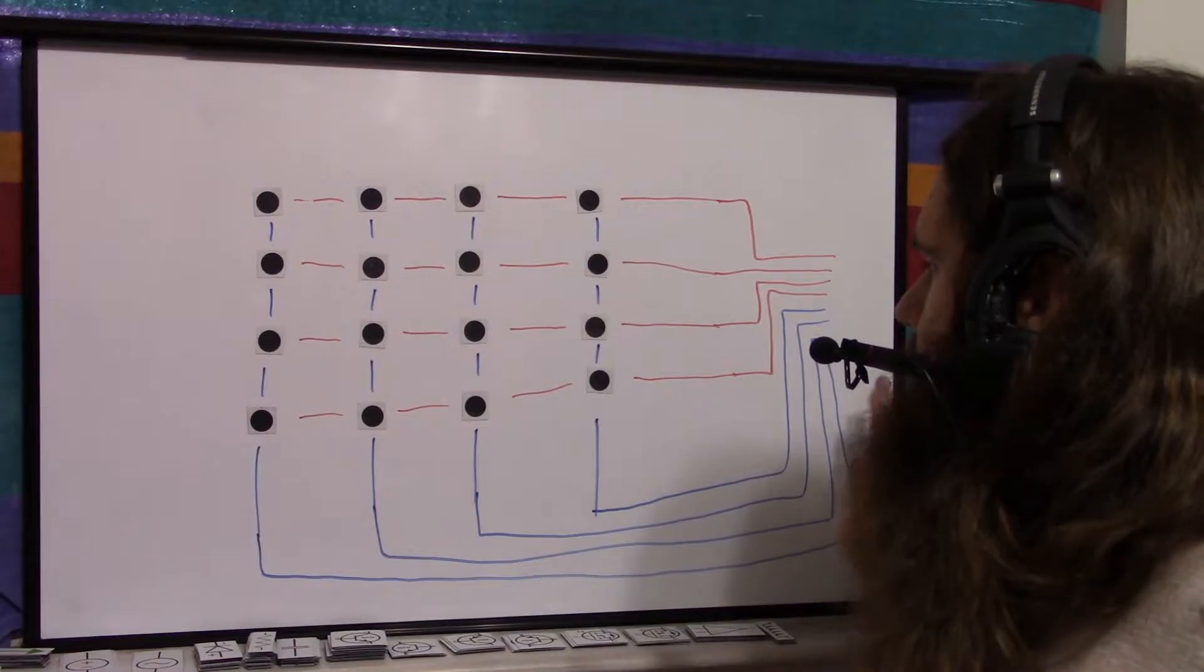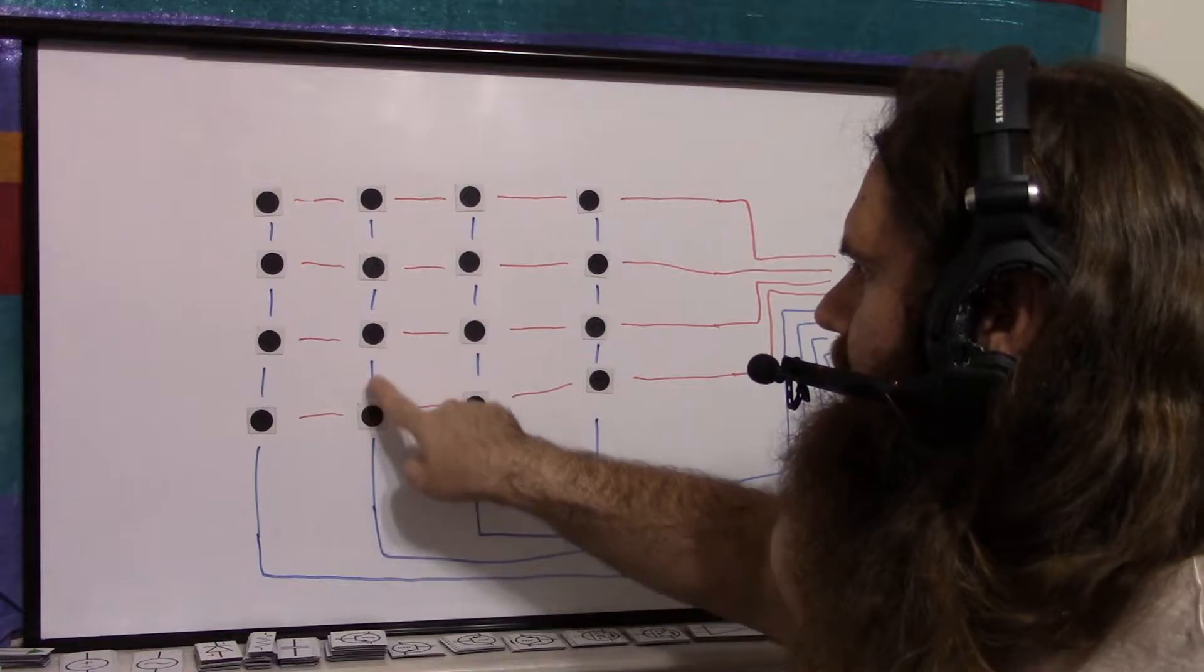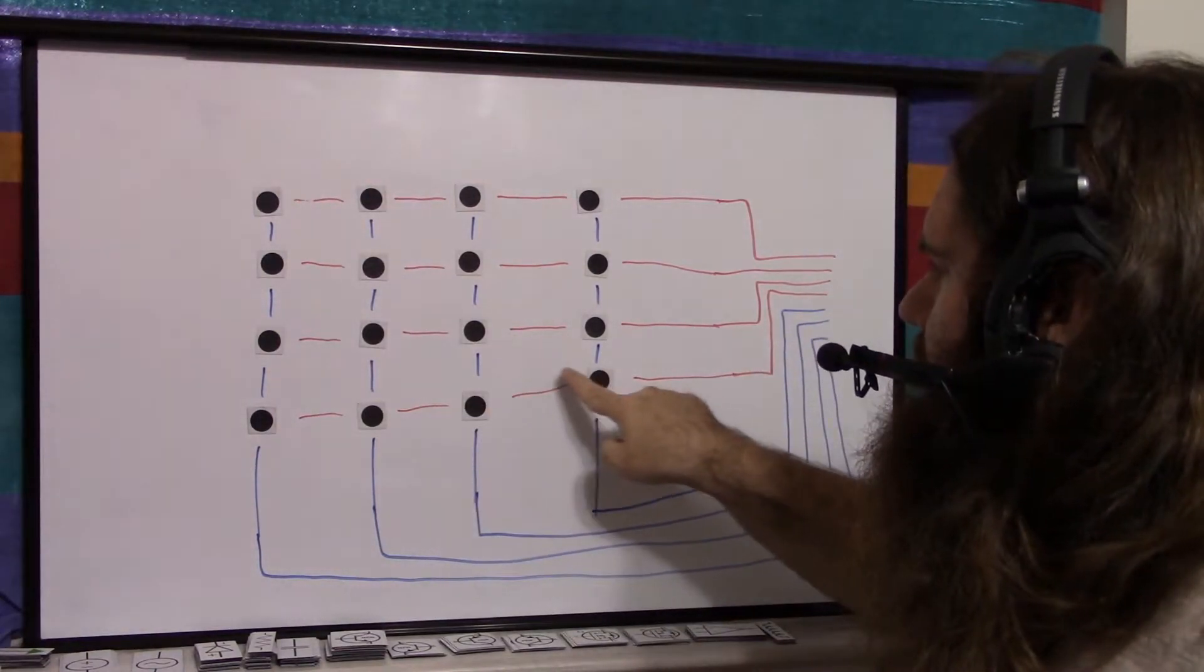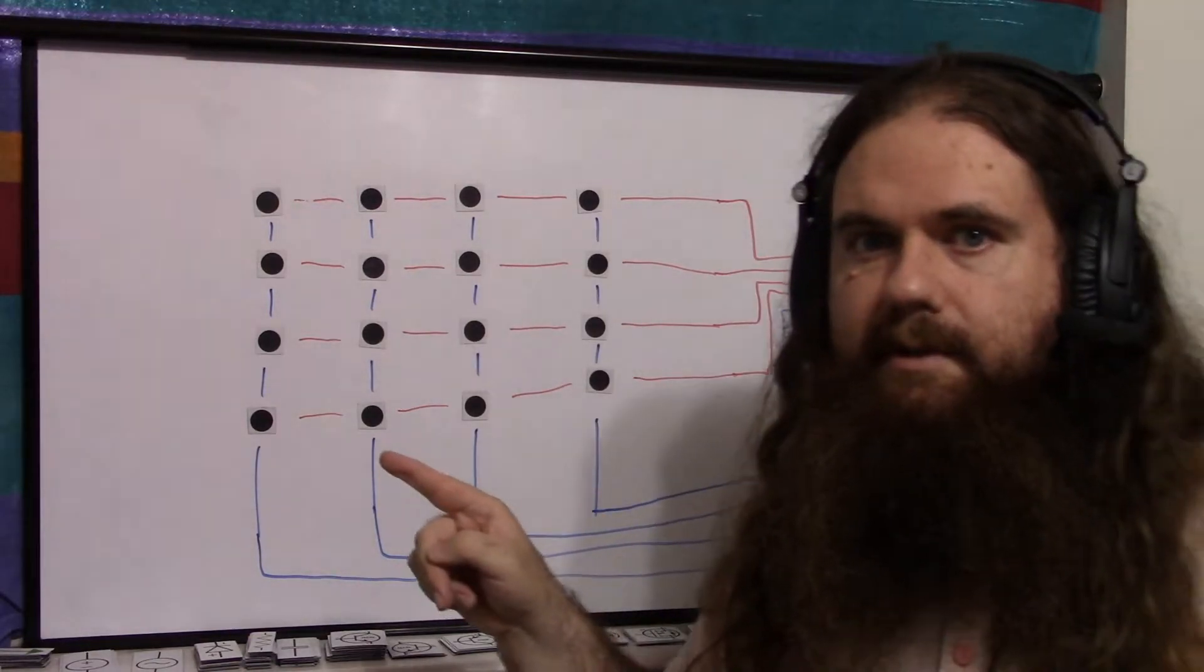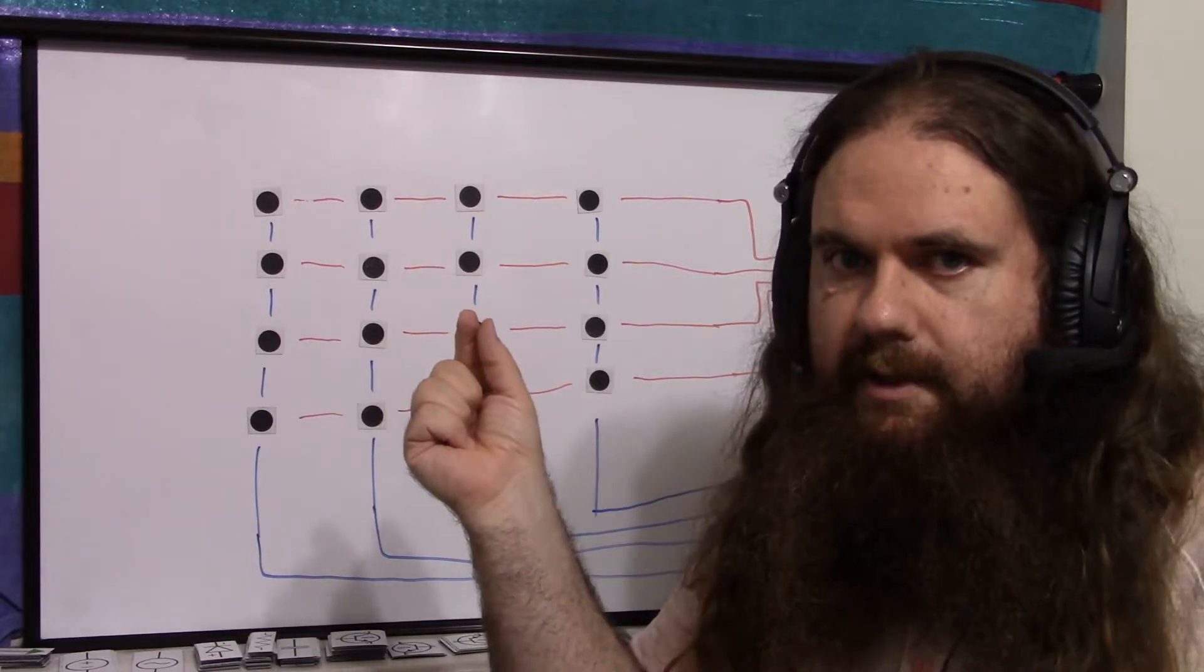You could also do it the other way. You put a power signal on one of the columns. So you power this column, and then if any of these four buttons are pressed, they will forward that power along to one of the row lines because it connects column and row. It just physically connects the two conductor lines.